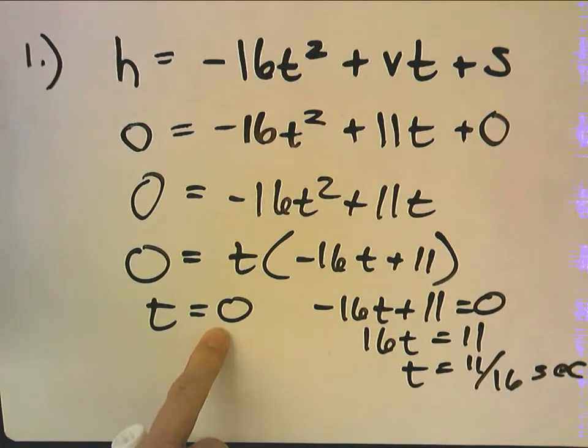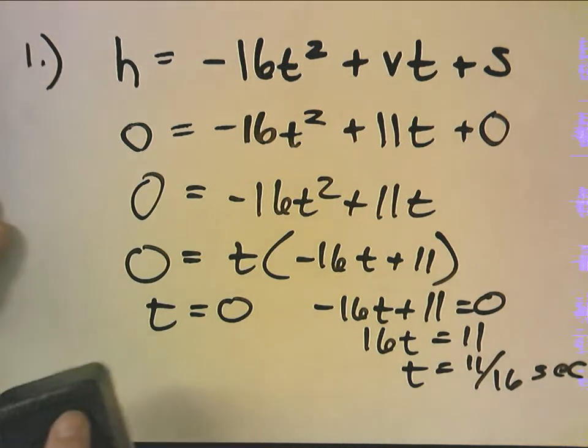Because if t equals zero that means he has not jumped yet, nothing has happened.